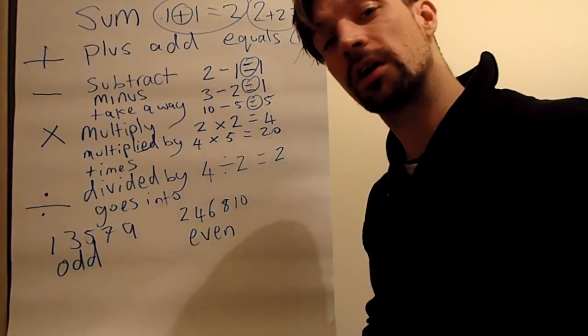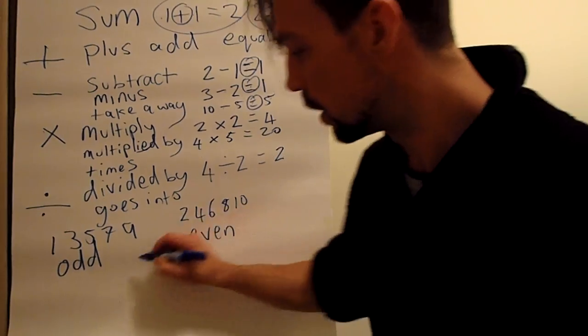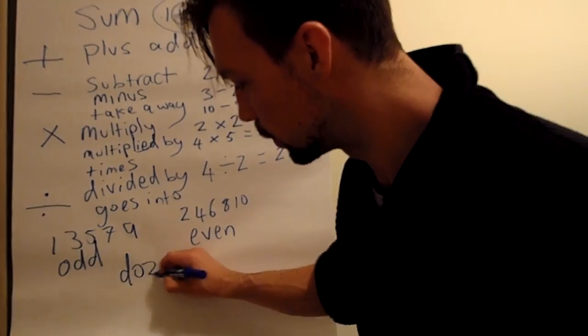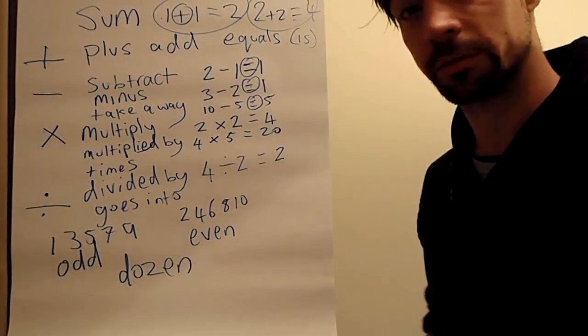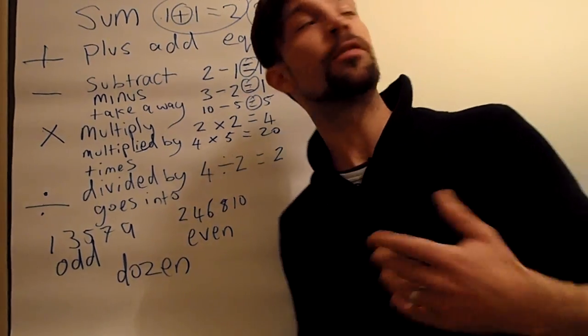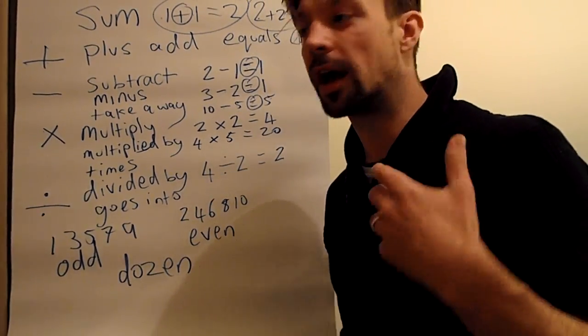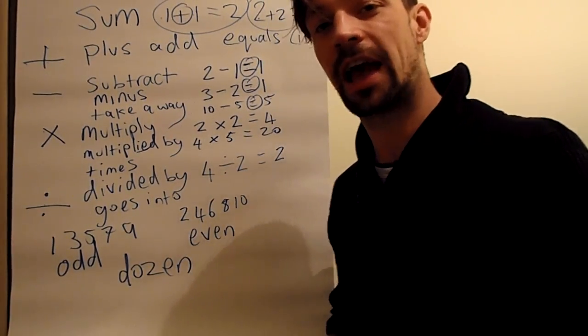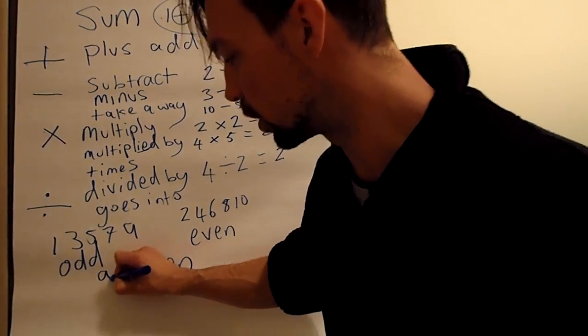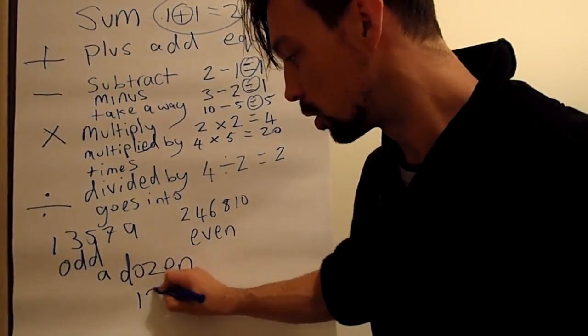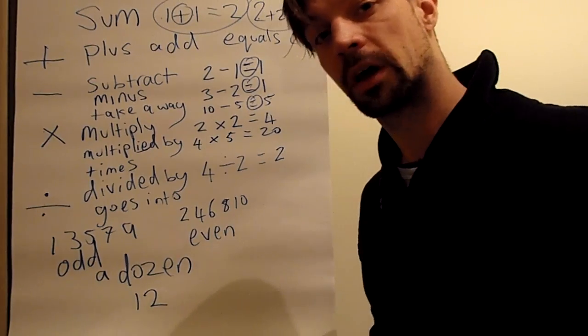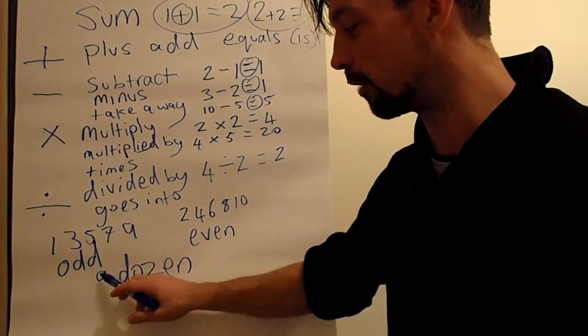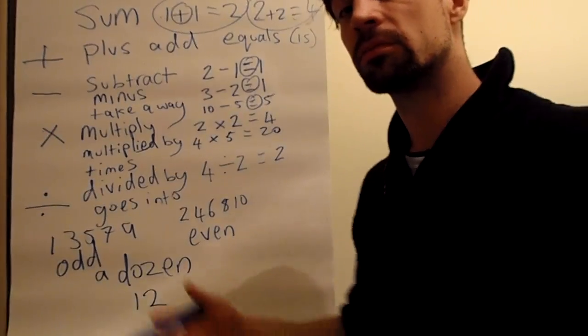Another interesting word: sometimes this is used in maths, and it's the word dozen. For example, if you go into a shop and you say, can I have a dozen eggs please? A dozen. And it means twelve, a group of twelve things. Can I have a dozen eggs? Twelve. Can I have a dozen bars of chocolate? Twelve.